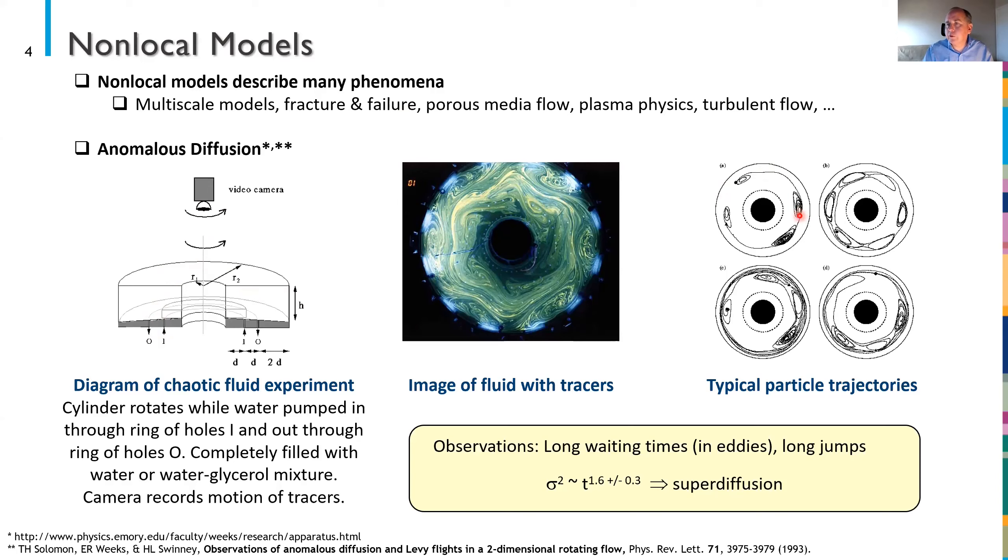These are typical particle trajectories here at the right and you can see the particles tend to be caught up in eddies for some extended period of time and then suddenly make a long jump somewhere else where they'll get caught up in an eddy. Transport in the fluid can be characterized by the variance of the displacement of the distribution of tracer particles which for normal diffusion is linear in time. The people who did this experiment measured an exponent greater than one, in fact an exponent of one is not within their error bars so you'd very much categorize this as a super diffusive behavior.